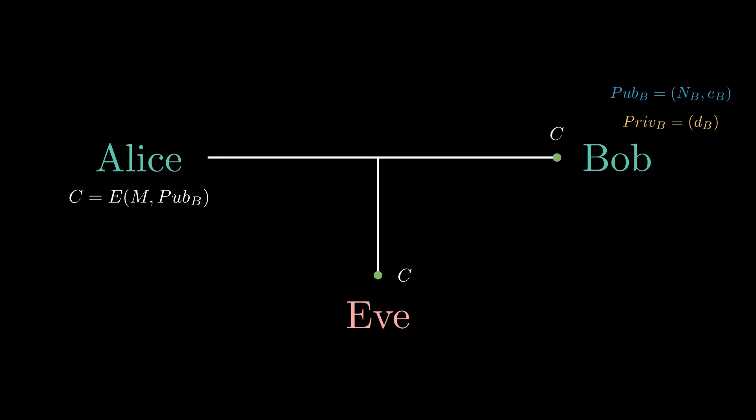When Bob receives the ciphertext C, he uses his private key to decrypt it, recovering the original message. In this case, even if someone intercepts the encrypted message C, they cannot decrypt it without Bob's private key.